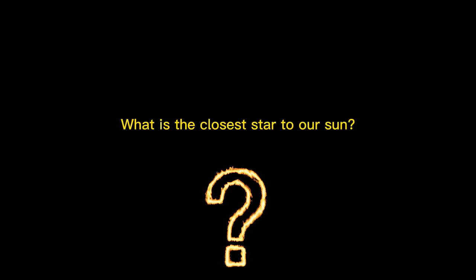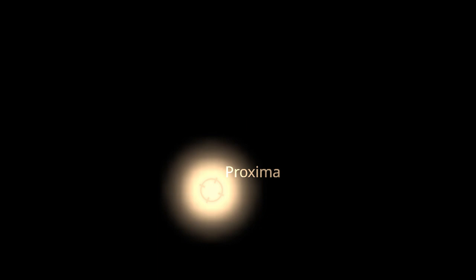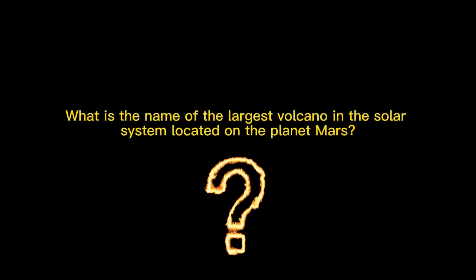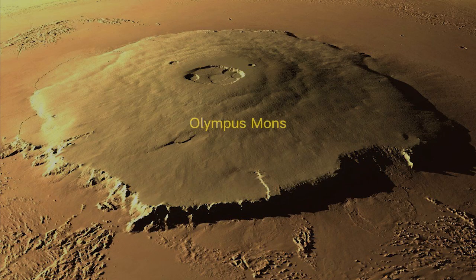What is the closest star to our sun? Proxima Centauri. What is the name of the first man-made satellite launched into space? Sputnik 1. What is the name of the largest volcano in the solar system located on the planet Mars? Olympus Mons.